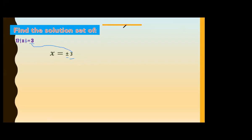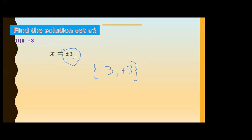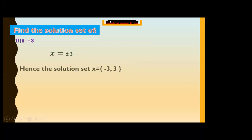For the solution set, we write the curly brackets and list both values: the negative first and then the positive. So the solution set is x equals {minus 3, plus 3}.